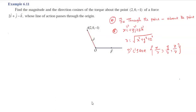Unit 6, example 6.11. Find the magnitude and the direction cosines of the torque. First we calculate the torque, so we calculate the magnitude and the direction of the torque.